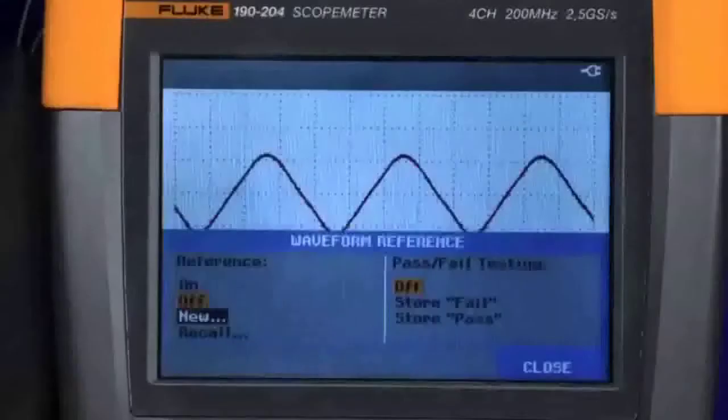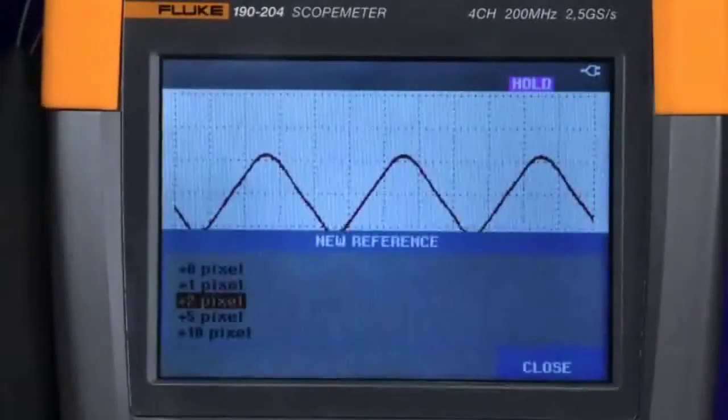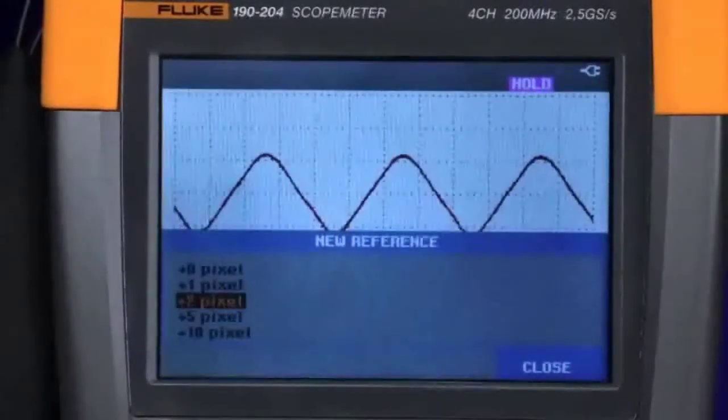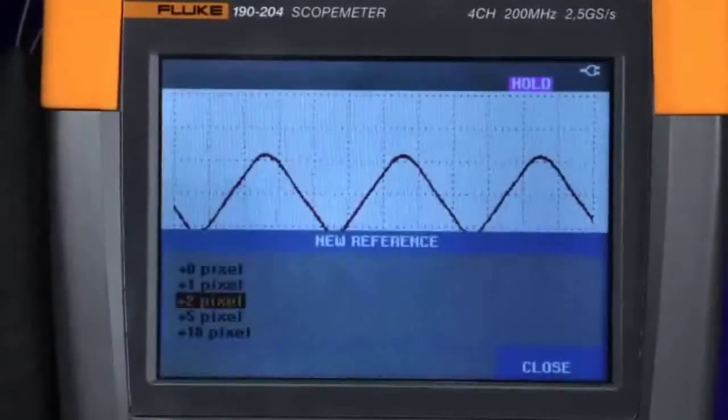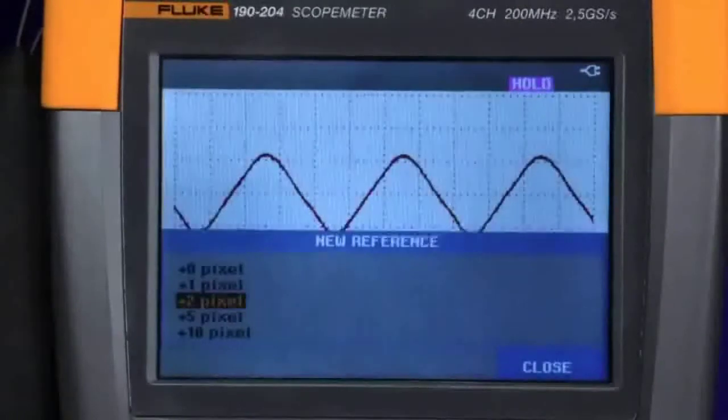Here is where you define the window of tolerance by the number of pixels. In this instance, we'll choose a relatively tight window by selecting plus two pixels around the known good waveform, then pressing enter.